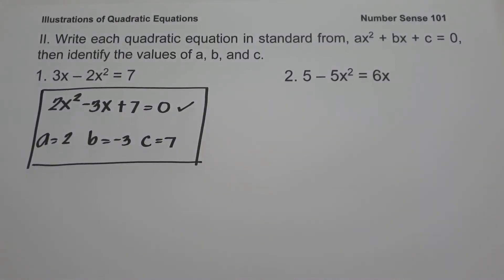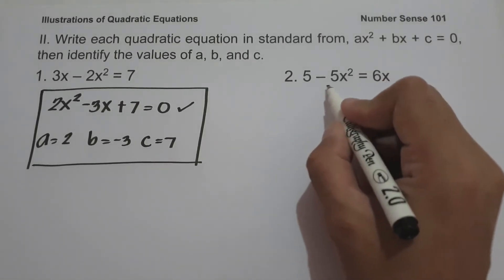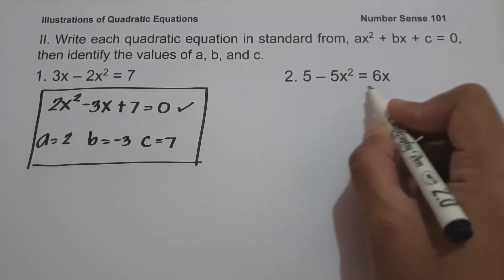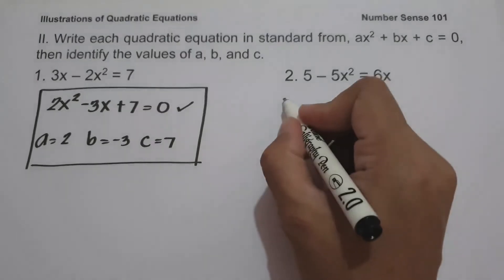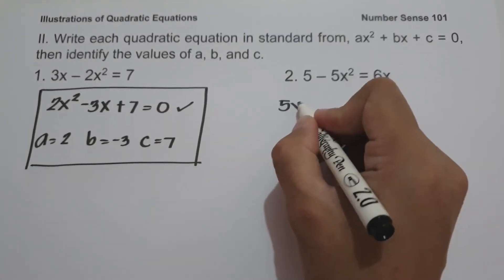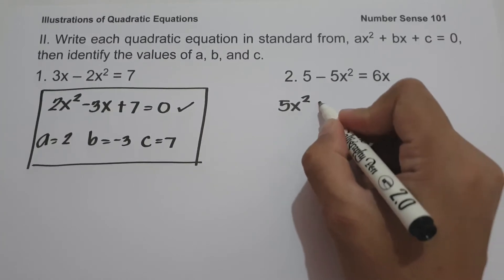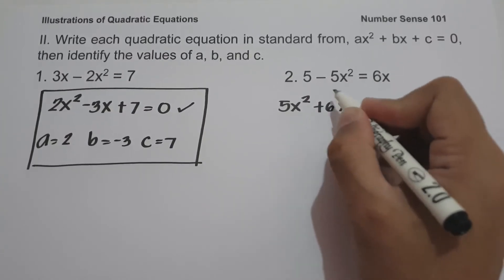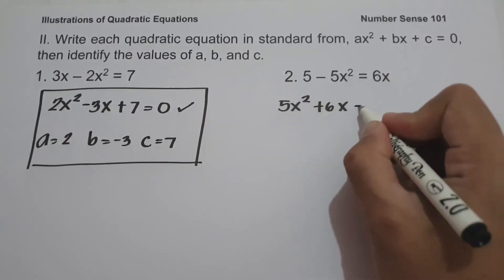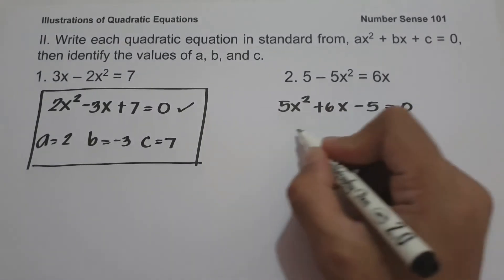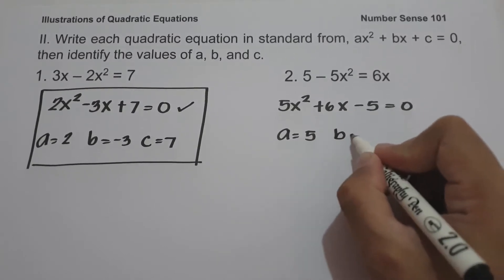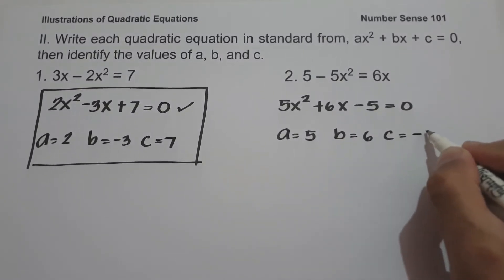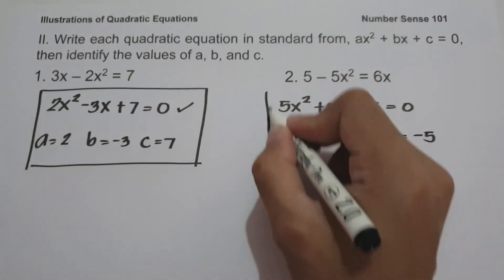On number two, we have 5 minus 5x squared equals 6x. Moving terms to write in standard form: 5x squared plus 6x minus 5 equals zero. The value of a is 5, b is 6, and c is negative 5.